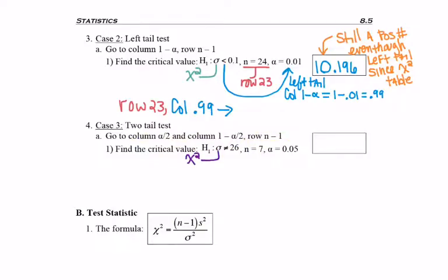The alternate hypothesis has sigma, so I'm testing a standard deviation and using the chi-squared table. Not equal to tells me I have a two-tailed test, so I'm going to get two answers. And remember, it is not plus or minus for the two critical values, since the table does not contain negative values.